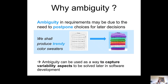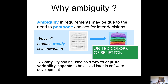Why ambiguity? Often ambiguity in a requirement is due to the need to postpone choices for later decisions. For instance, in my hometown in the 1960s there was a small factory that wanted to produce trendy color sweaters. They decided to produce in white and then color only the difference — you don't know what 'trendy' means at the beginning of production. The idea was pretty successful, and ambiguity can in fact be used as a way to capture variability aspects that have to be resolved later in software development.